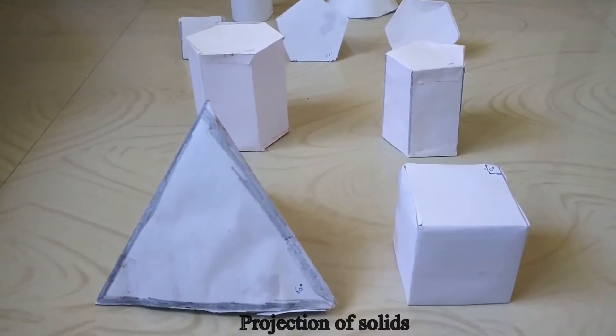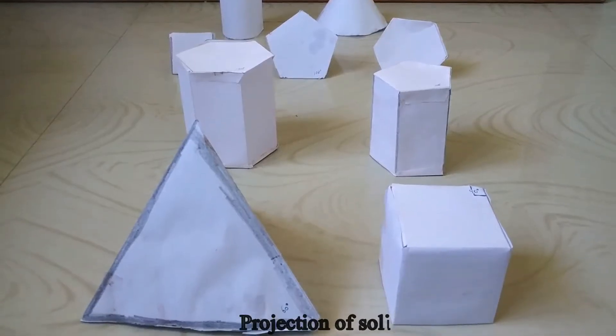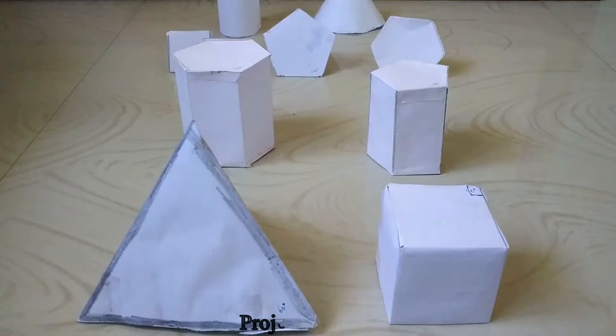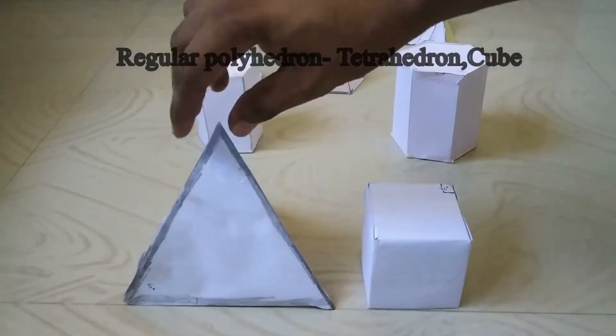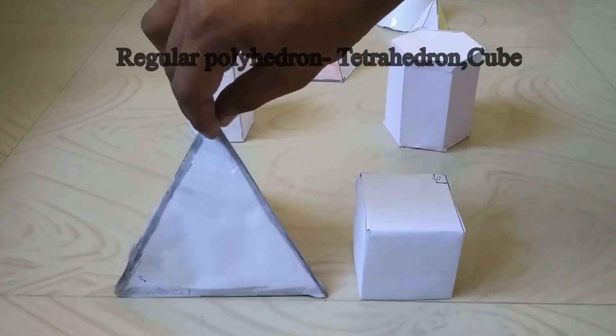In this video, we are going to learn the various types of solids and their naming. Let us take a regular polygon. It is a cube, and this one is a tetrahedron. These are regular polygons, which means